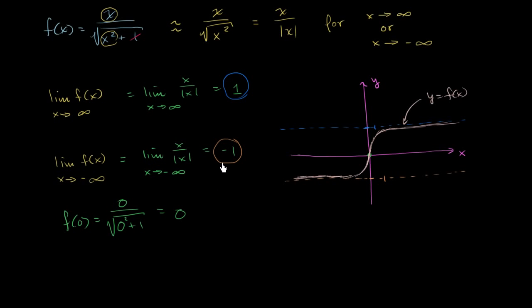Remember, the key is just to identify what terms dominate as x approaches positive infinity or negative infinity, and then determine what the function is going to approach — which gives you the horizontal asymptotes in the positive and negative directions.